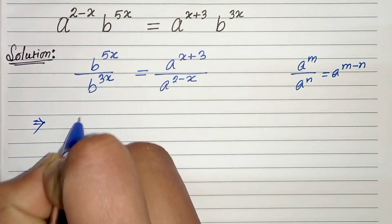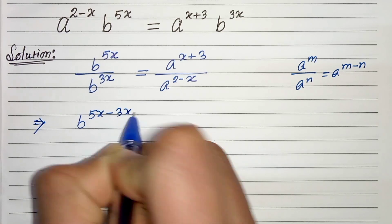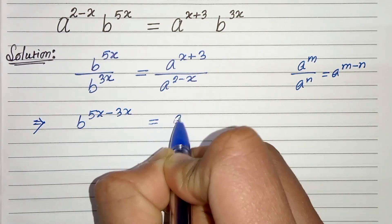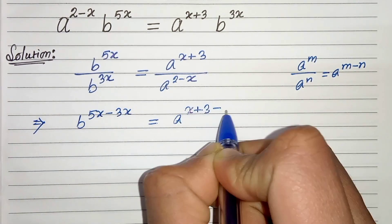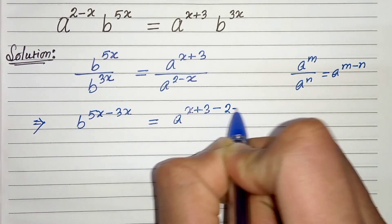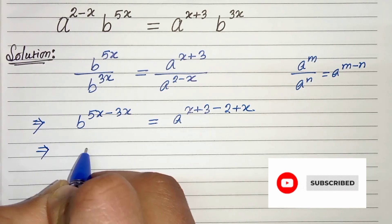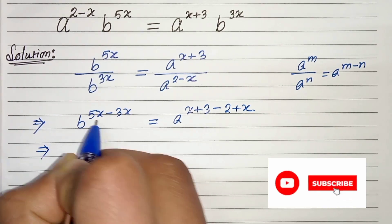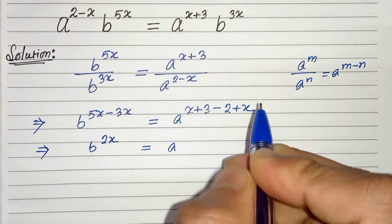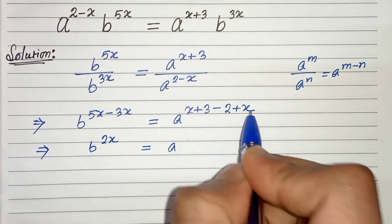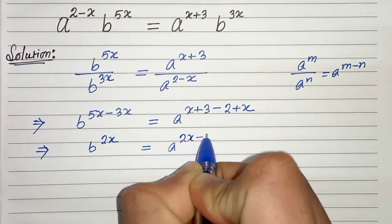So we will get b to the power 5x minus 3x, and on the right hand side a to the power x plus 3 minus of 2 plus x. In the next step we get b to the power 5x minus 3x is 2x, and a to the power x plus x is 2x and 3 minus 2 is 1, so 2x minus 1.